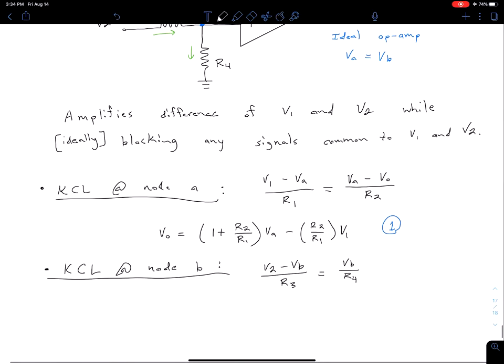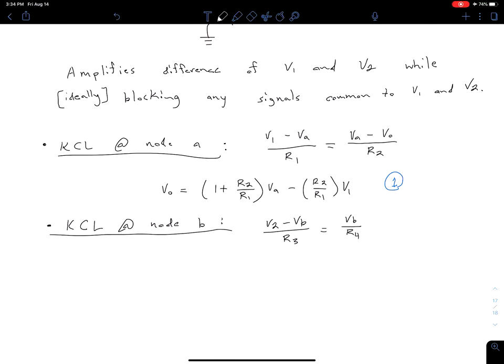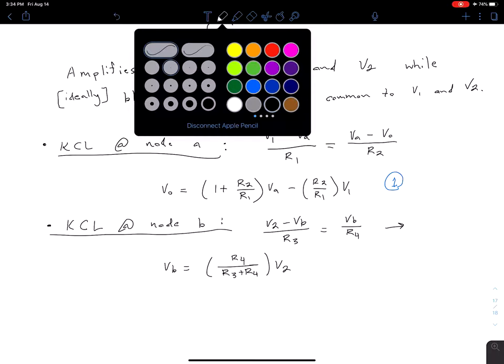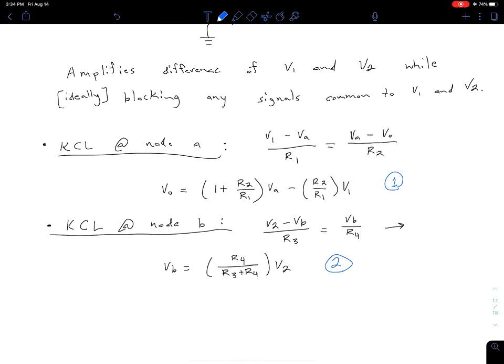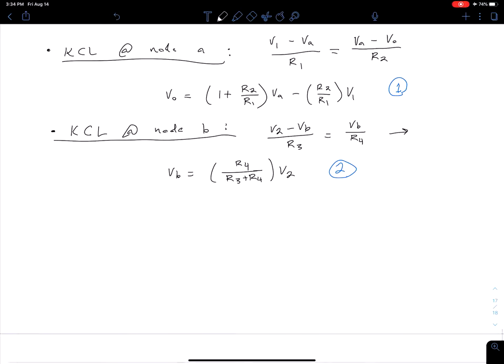We can use some algebra. In this case, we're going to solve for VB. Solving for VB, we find that VB is equal to R4 over R3 plus R4 times V2. At any point, if you have any questions about what these algebra steps are in between, please feel free to let me know. I just try not to go into excruciating detail that nobody wants to see during the notes, but I'm always happy to do that if anybody wants to see.